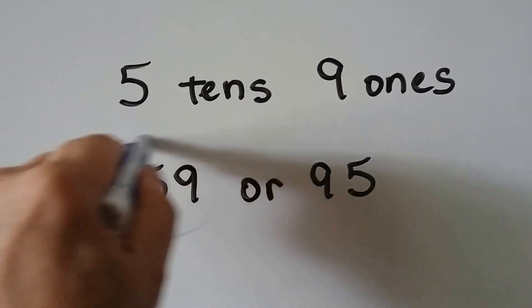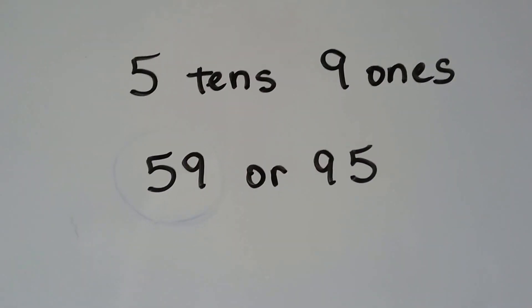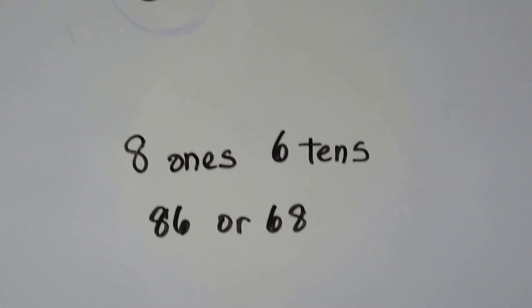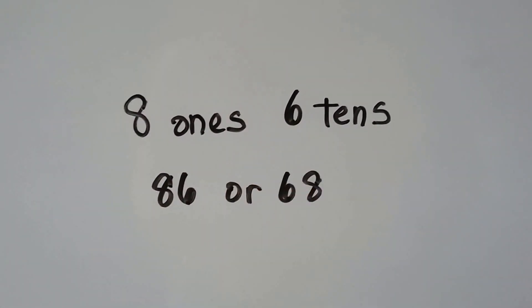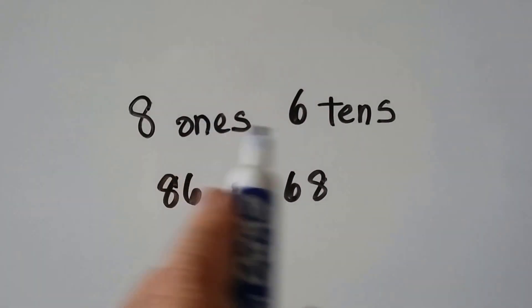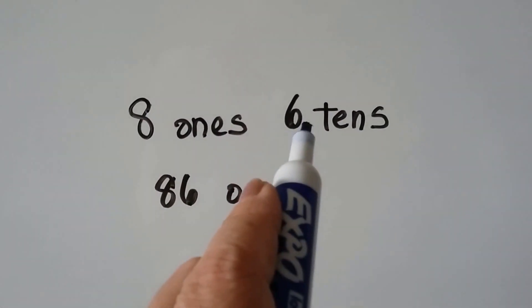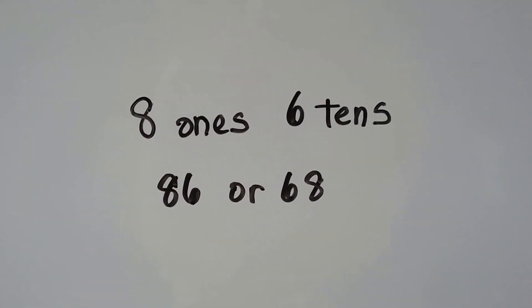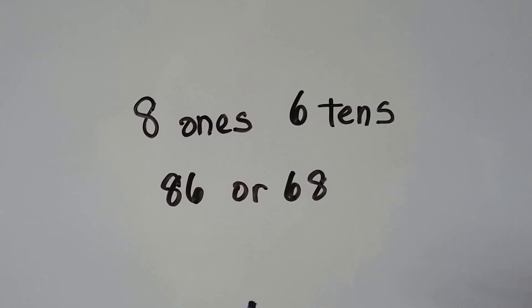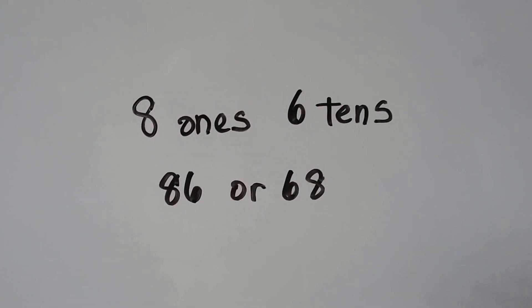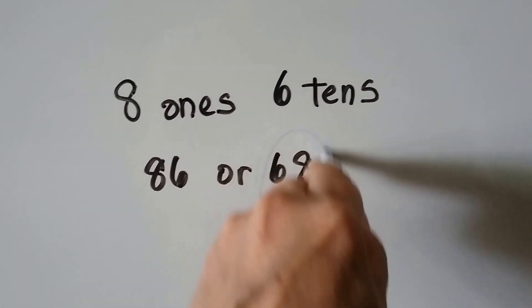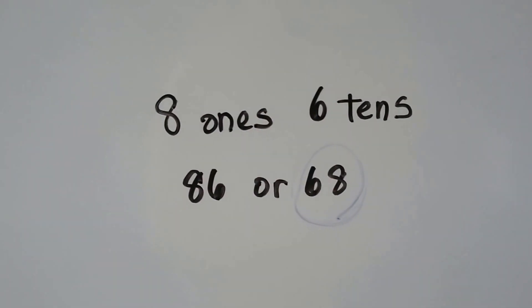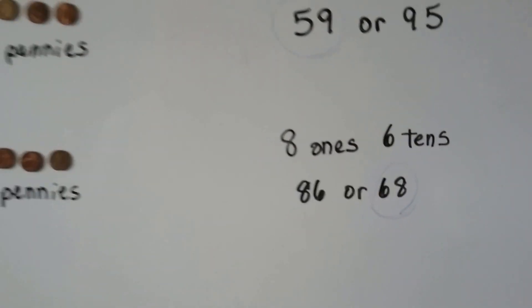How about this one? Be careful—it says eight ones and six tens. Oh, these are in a different order, aren't they? Well, we know there's a six in the tens place, so which number has a six in the tens place? If you said this one, you're correct.